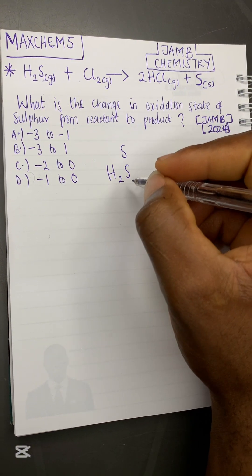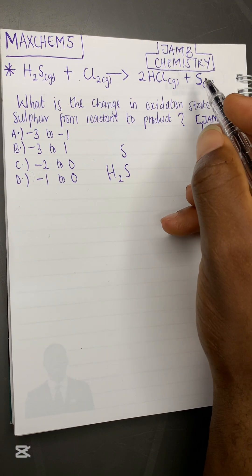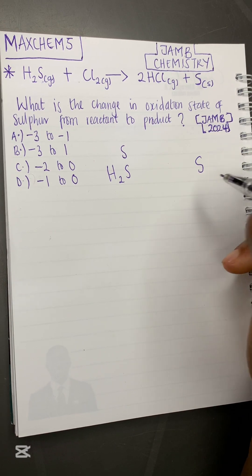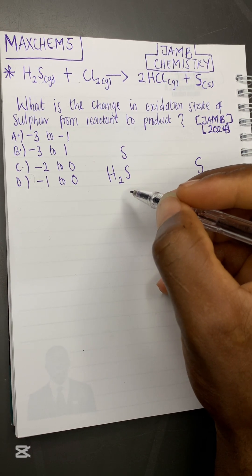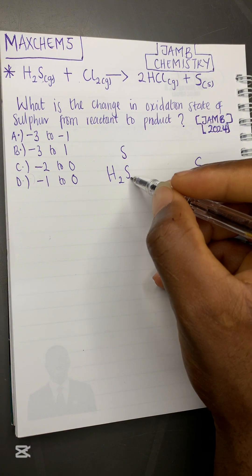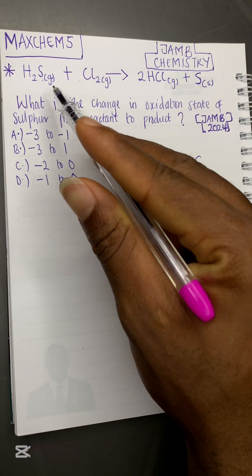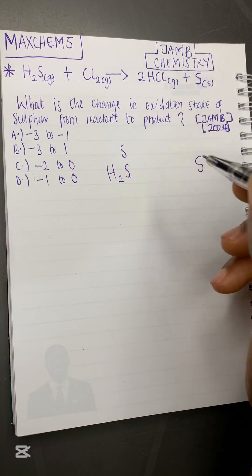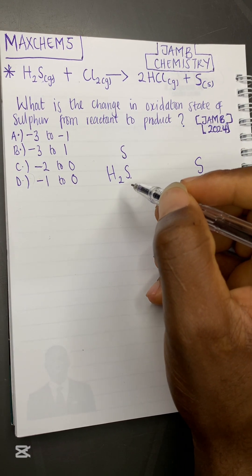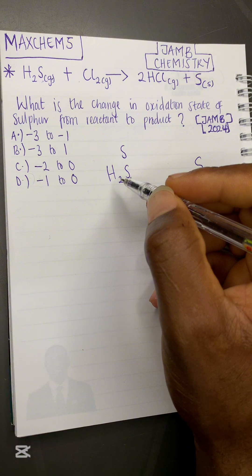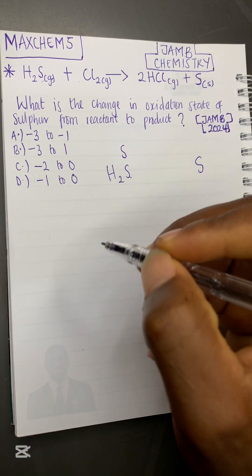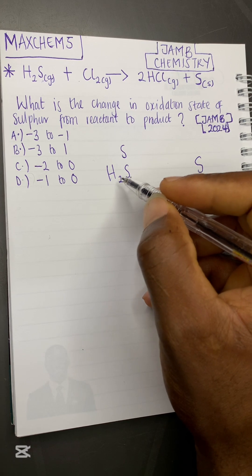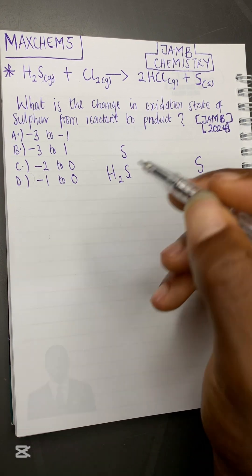Sulfur at our reactant side is in H₂S, which is our hydrogen sulfide gas, and at the product side it is our normal sulfur solid. What we need to do is calculate the oxidation number of sulfur at the reactant side and also the oxidation number of sulfur at the product side. We want to find the oxidation number of sulfur in this particular compound. Let's find for H₂S first.